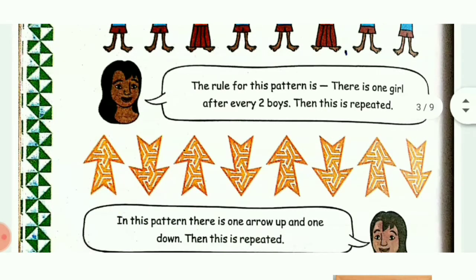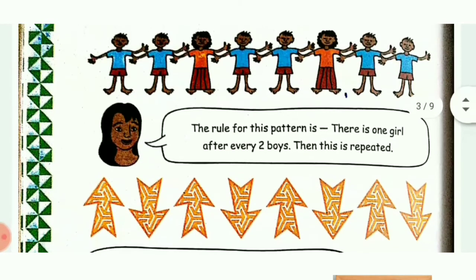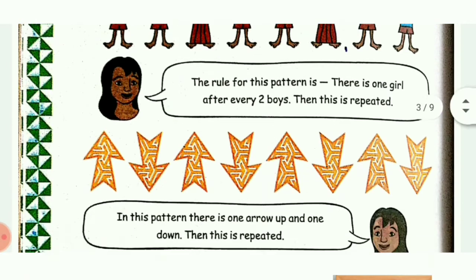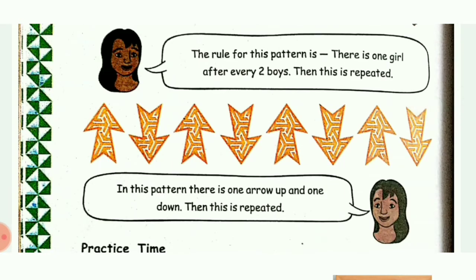Second picture - can you guess what this pattern is? Upward arrow, downward arrow, upward arrow, downward arrow - in this way it is getting repeated. The arrow is placed either upward or downward. In this pattern there is one arrow up and one arrow down, then this is repeated.